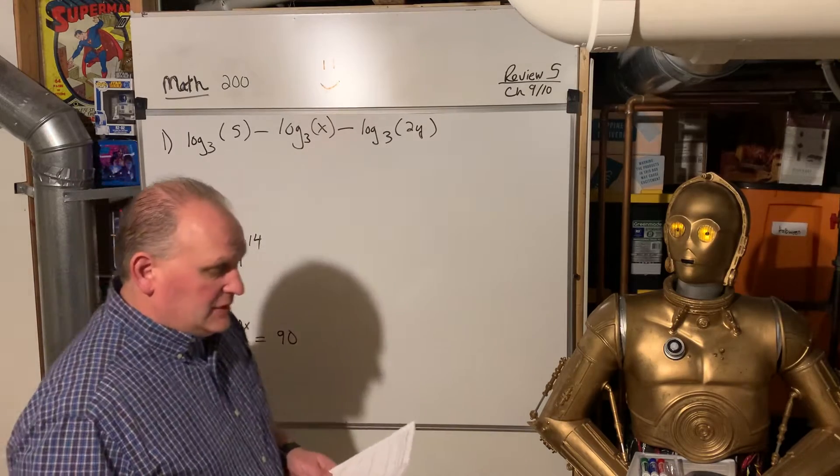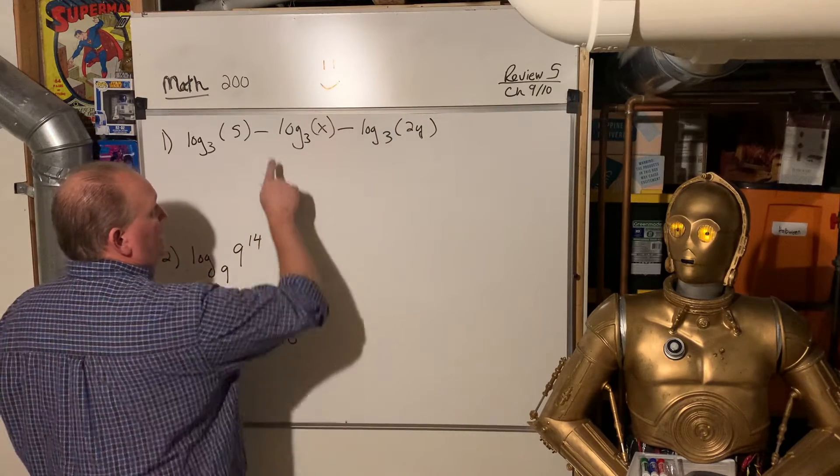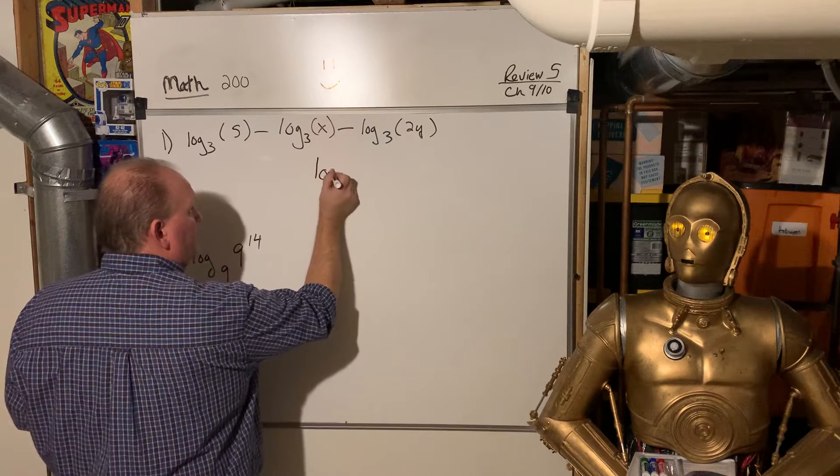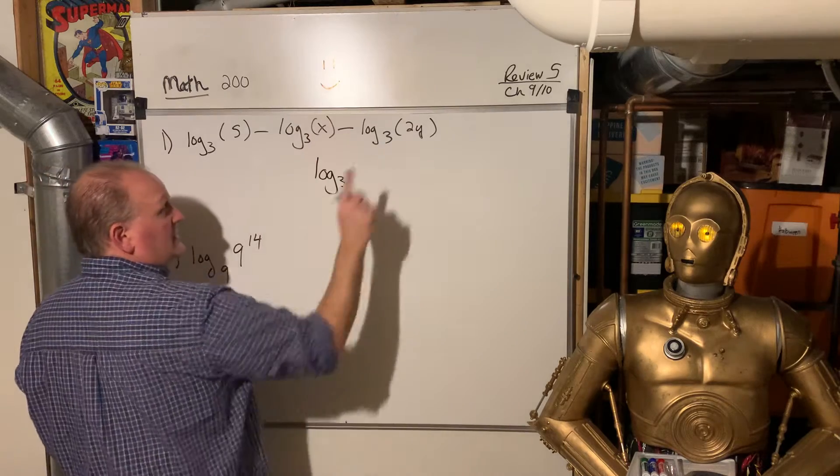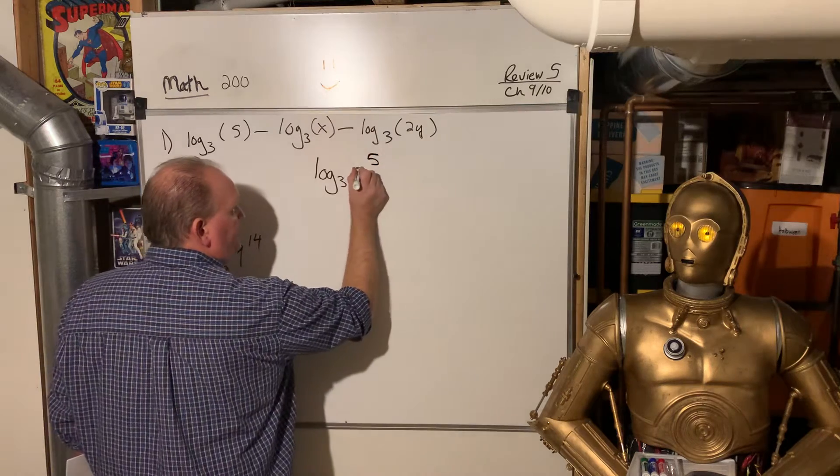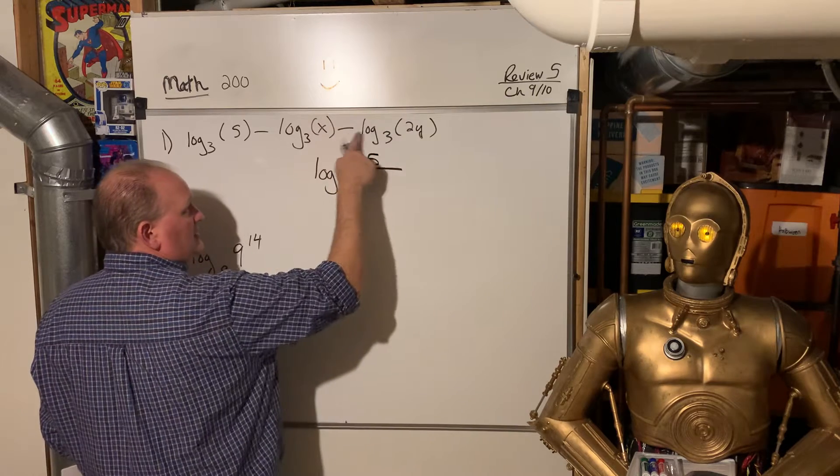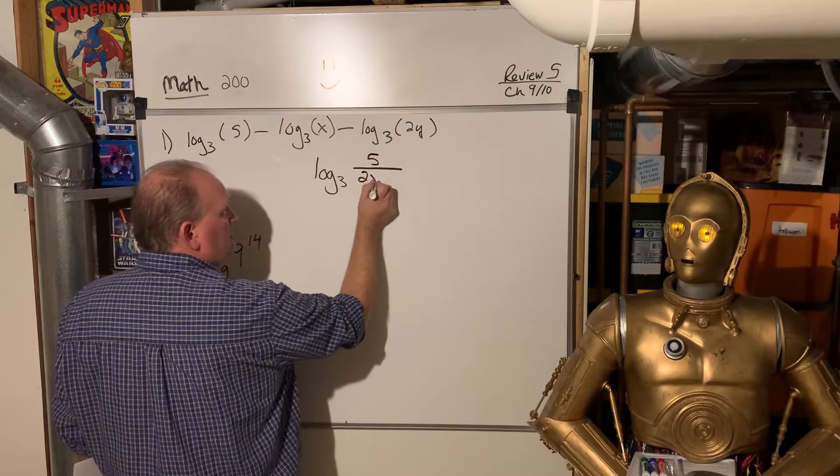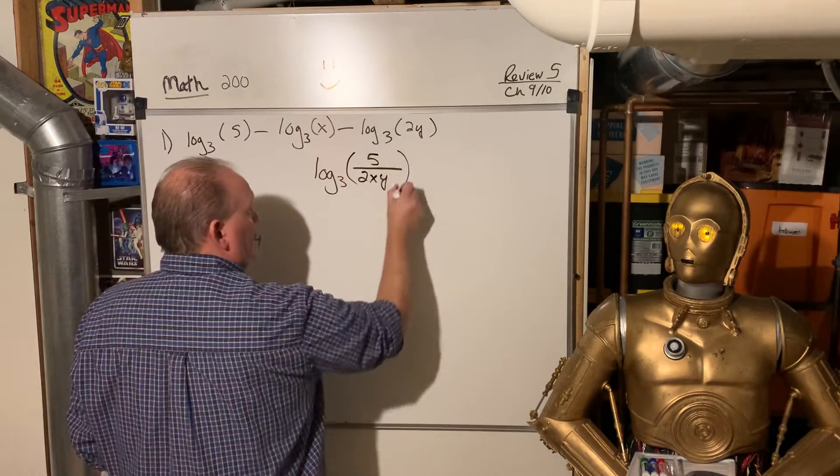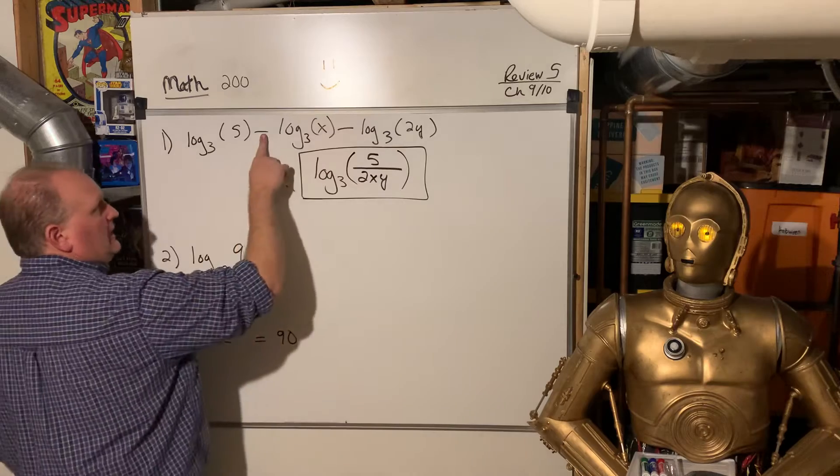We've got write the given expression in a single logarithm. Remember minus means divide in log land. So this is log base 3, because all of them have the same base. If there were different bases, you couldn't do that. 5 divided by x, but it would also be divided by 2y. So we'll just make it 2xy. Number comes first. And that's it. Done. So minus means divide.